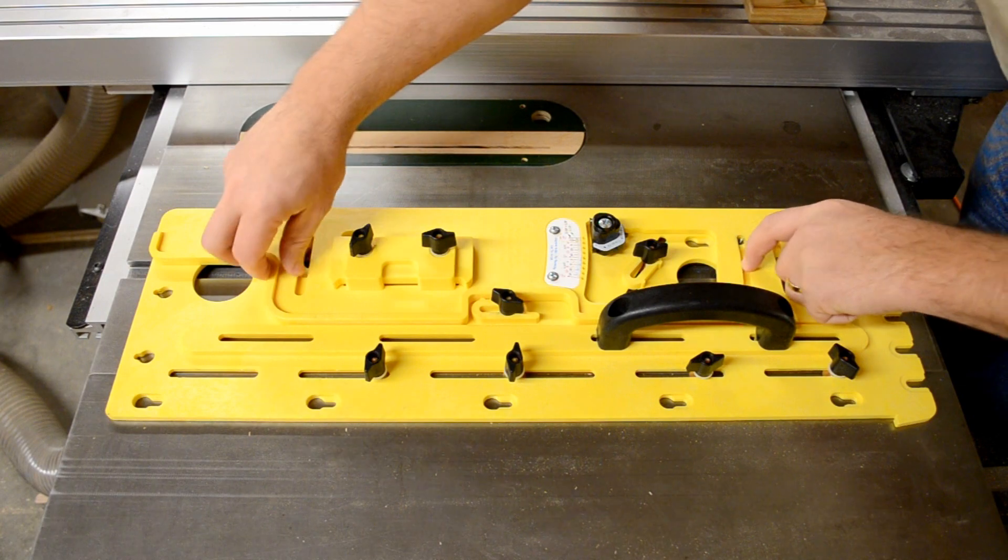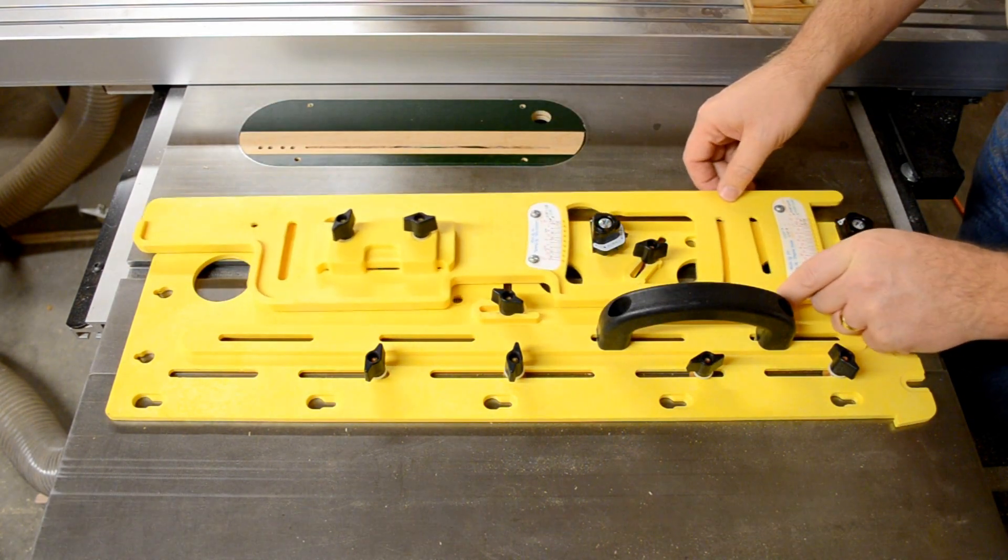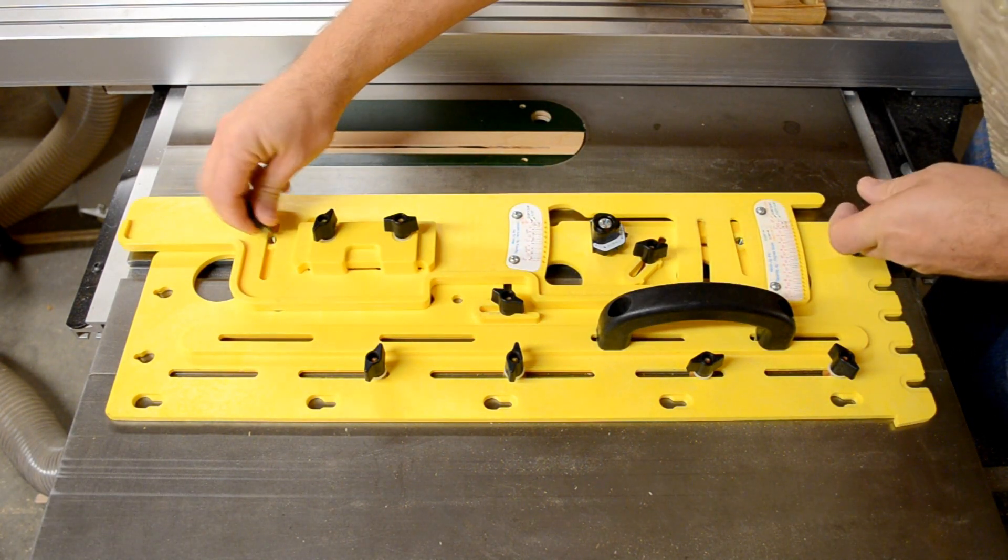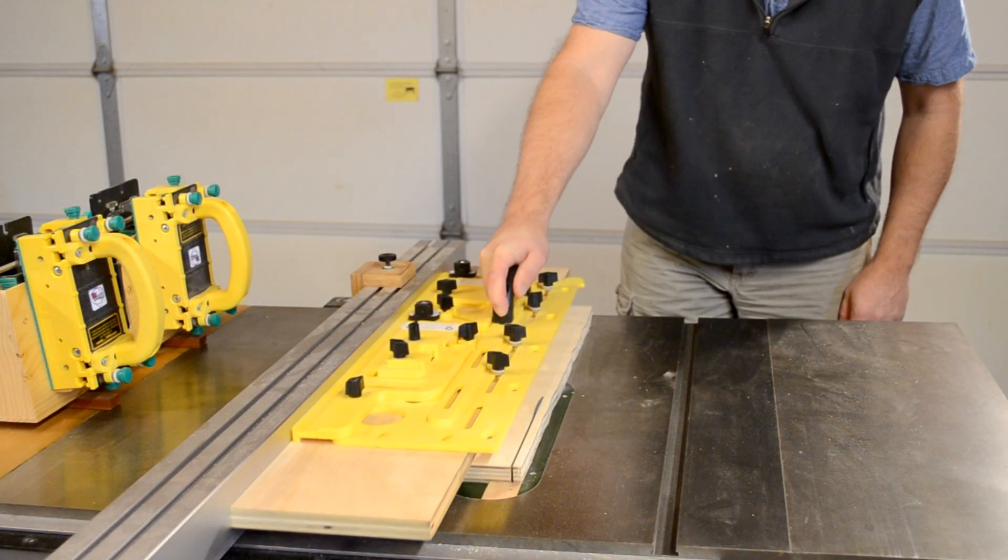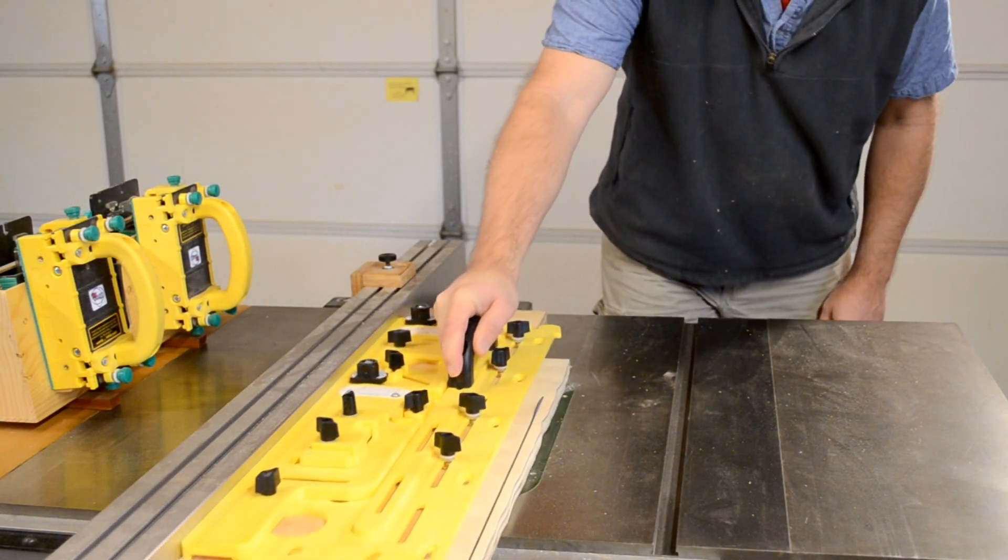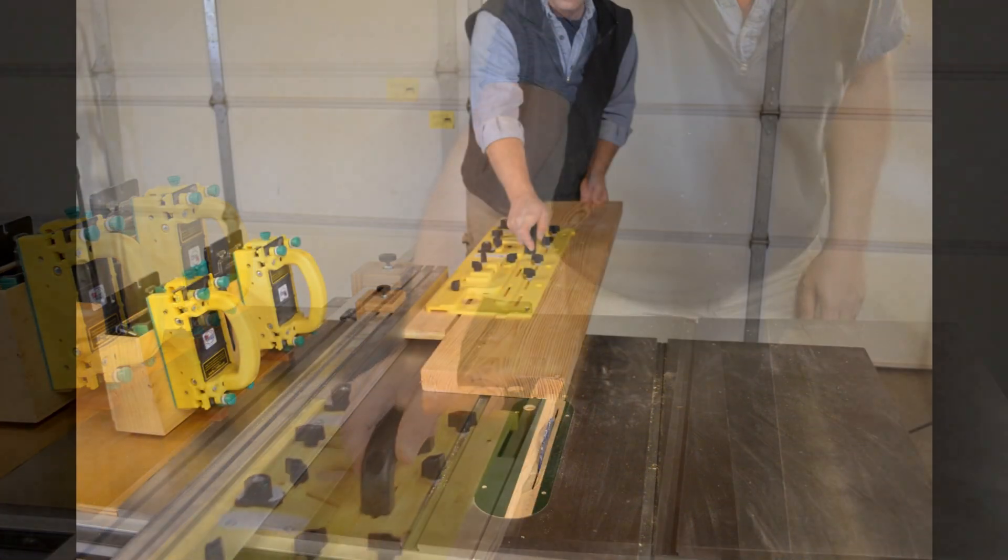Safe and accurate cutting on the table saw must begin with a clean, straight edge. The Microdial Taper Jig not only makes taper cuts quick and easy, but can be configured to act as a jointer, creating a clean, straight edge on your parts.